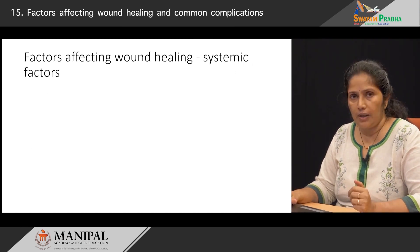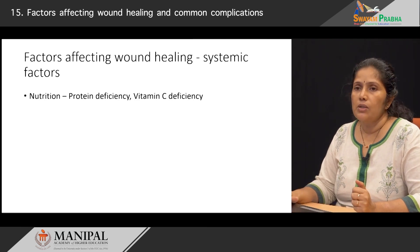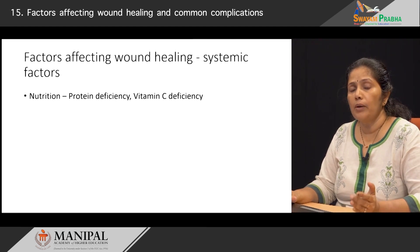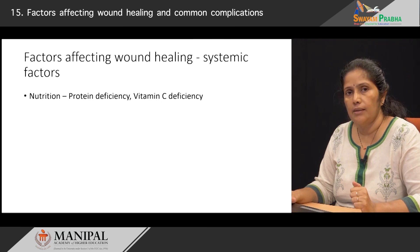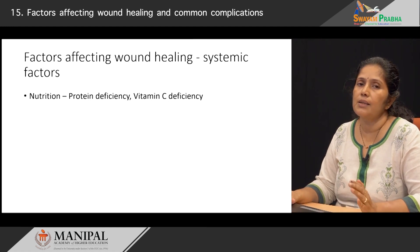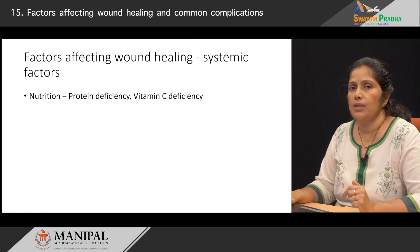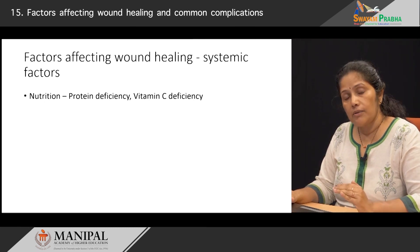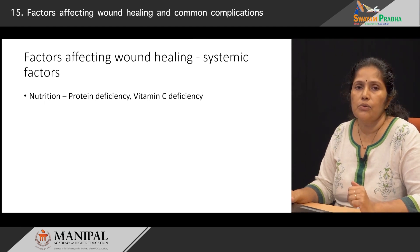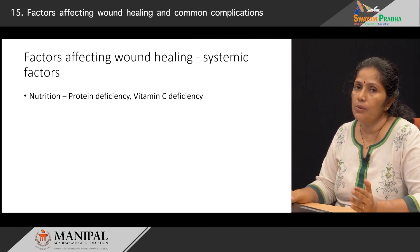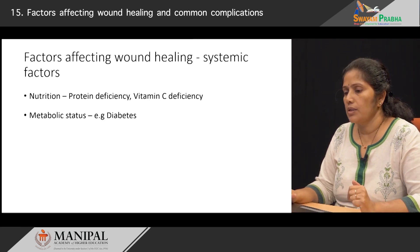Now let us look at some of the systemic factors — some diseases that the patient has which can prevent wound healing. Primary importance is the nutrition of the person. A good amount of protein is required for proper healing to occur, and along with that the presence of vitamin C also improves the healing process. Vitamin C is very important in the formation of collagen, and collagen formation is an important part of granulation tissue which helps to repair injuries. Hence, a good protein diet and good amount of vitamin C helps in wound healing.